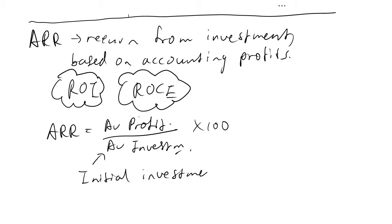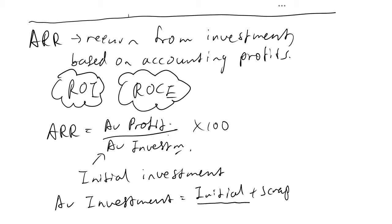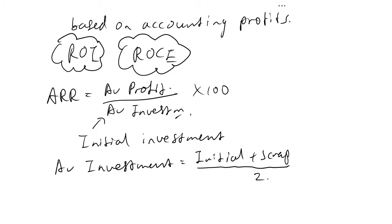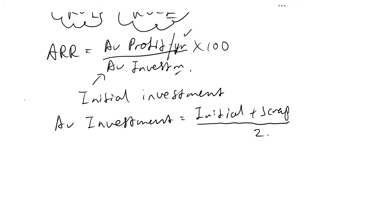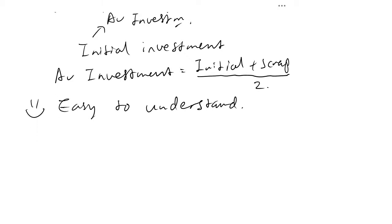Average investment is simple — you take the initial investment cost plus the scrap value of the investment and divide by two. Average profit refers to average profit per year, so if profits vary from year to year, you just average them to find the annual average. The advantage of accounting rate of return is that it's easy to understand since the concept is similar to ROI and ROCE.